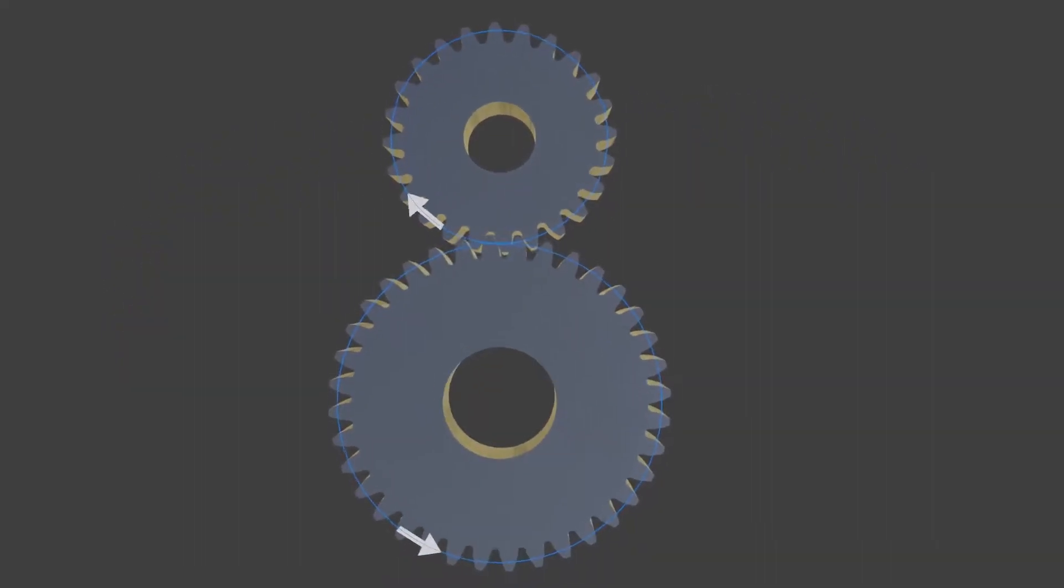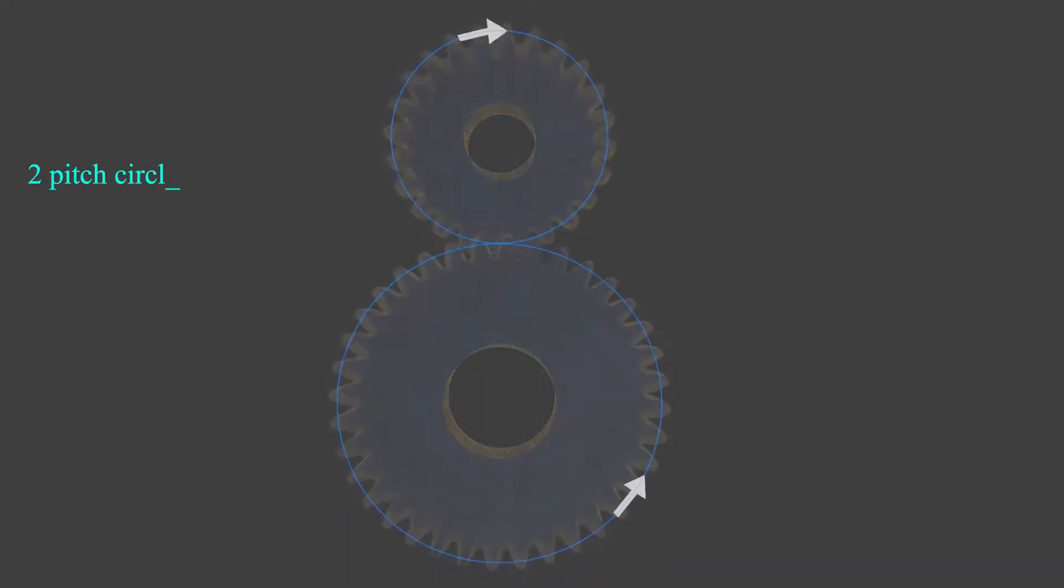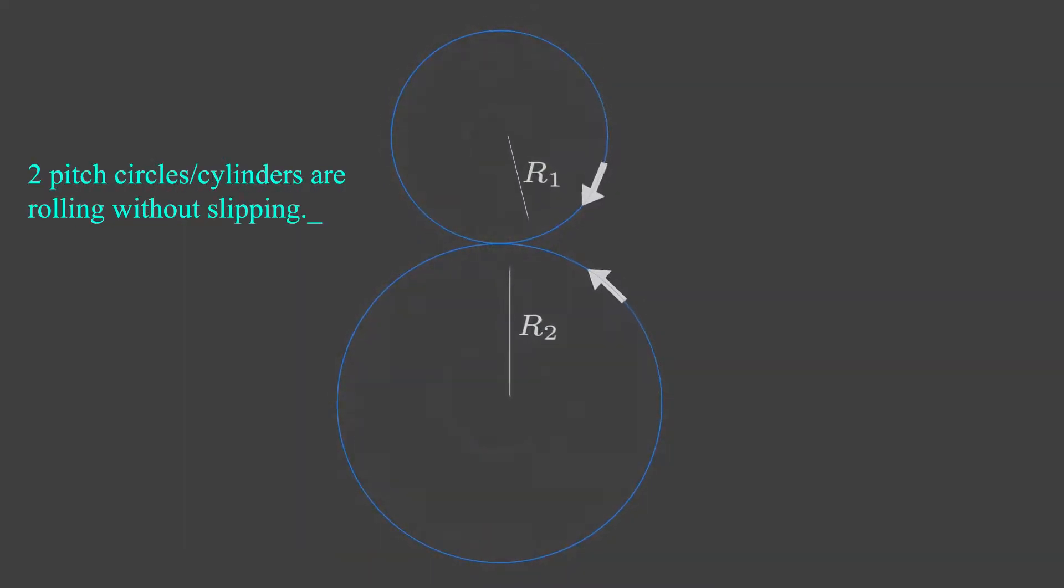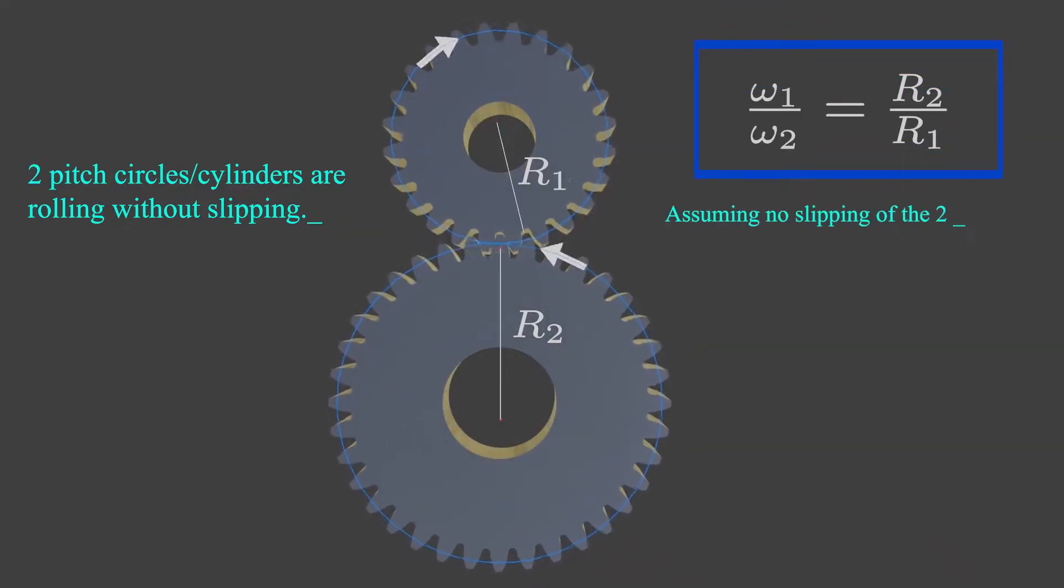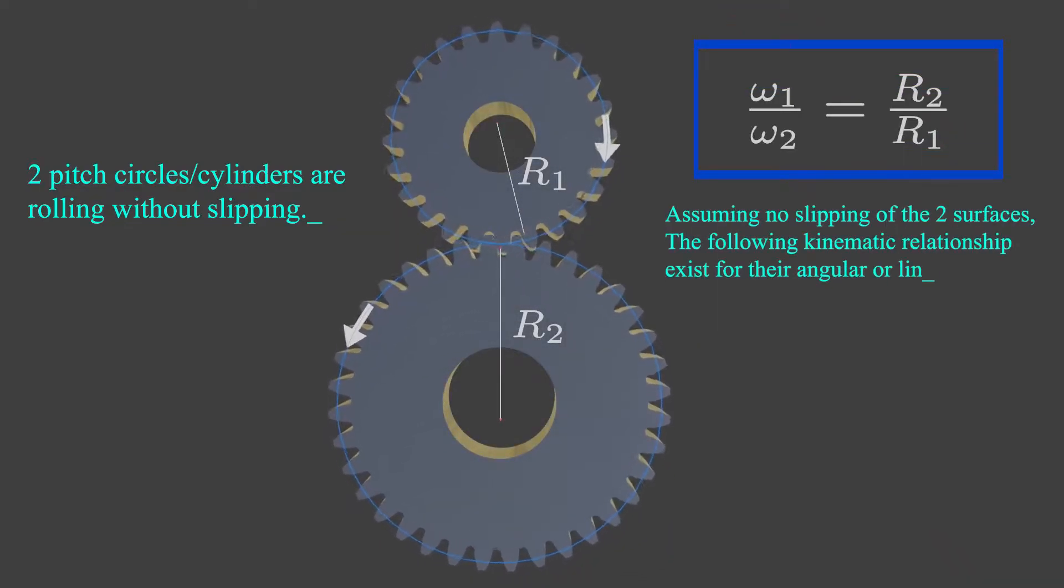When two gears are in mesh, they behave as if two smooth rollers are rolling on each other without slipping. The surface of each roller defines the pitch circle and its diameter is called the pitch diameter.